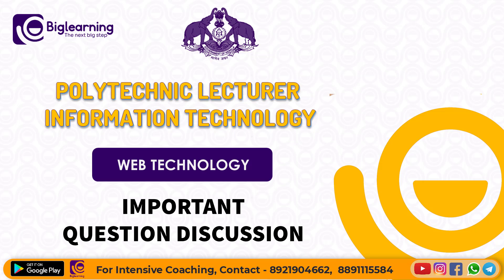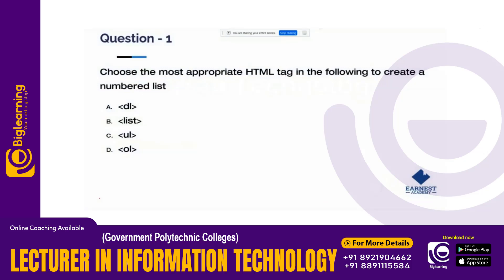The first question: choose the appropriate HTML tag to create a numbered list. A numbered list is created using an HTML tag. The answer is Option B — ordered list, using the <ol> tag.